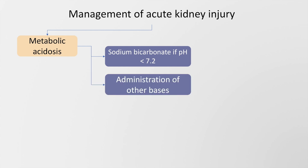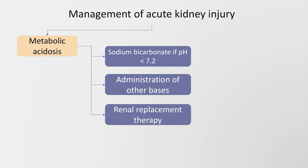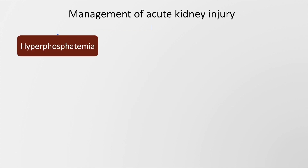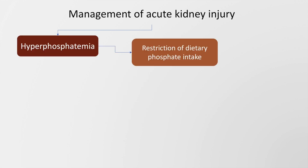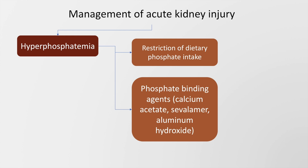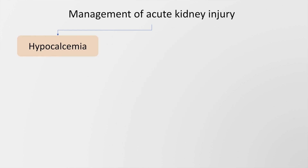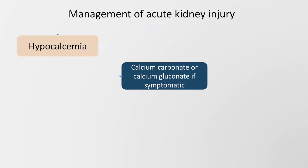If the pH is less than 7.2, administration of other bases such as THAM may also be considered. Renal replacement therapy is the definitive management. Patients with hyperphosphatemia may be managed with restriction of dietary phosphate intake. Phosphate-binding agents such as calcium acetate, sevelamer, and aluminum hydroxide may also be used. Hypocalcemia may be managed with calcium carbonate or calcium gluconate if the patient is symptomatic.